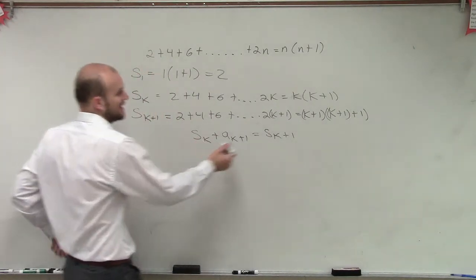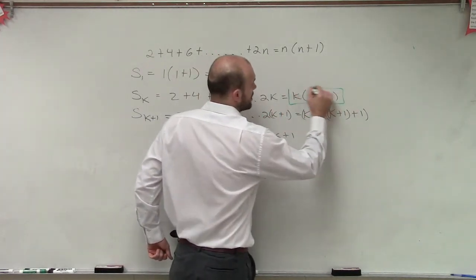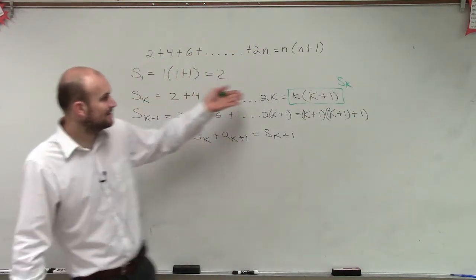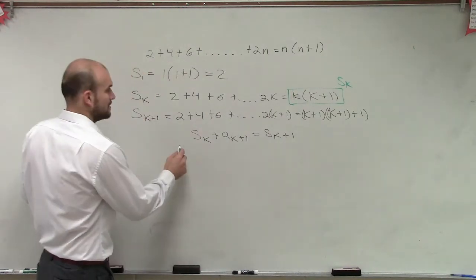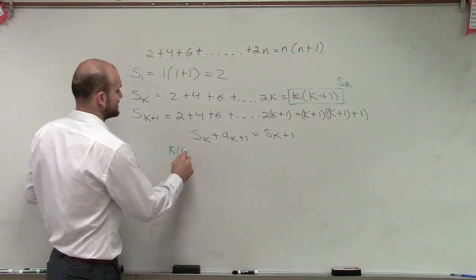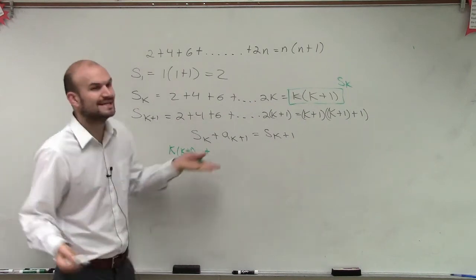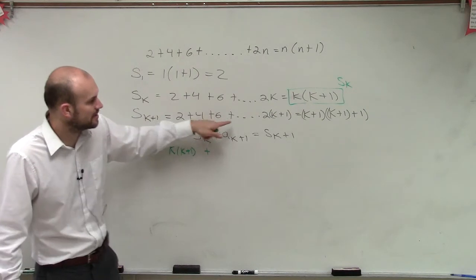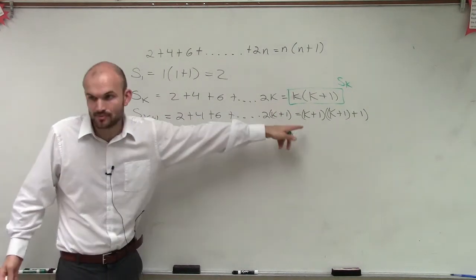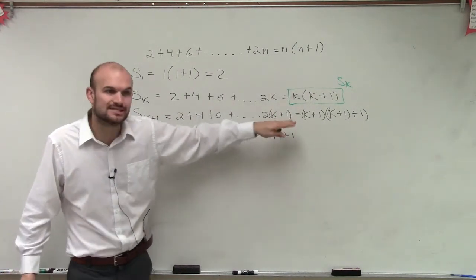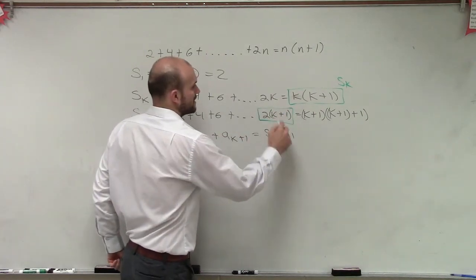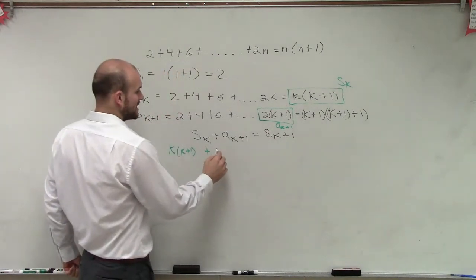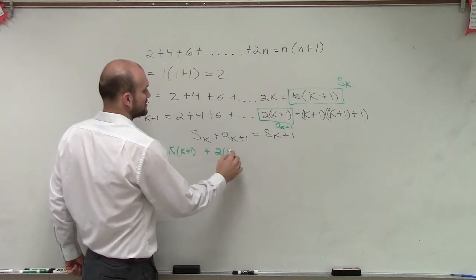So what we look at is we say what's sk? This is our sum of sk. When you plugged in k in for n, that's your sum of sk. So we say k times k plus 1 plus what is a k of 1? Well, if you look at s of k plus 1, it goes this number, this number, this number, that's a dot to k to 2 times k plus 1. So this would be your next term. So this is your a of k plus 1, that's the next term in the sequence. So that's going to be written as 2 times k plus 1.